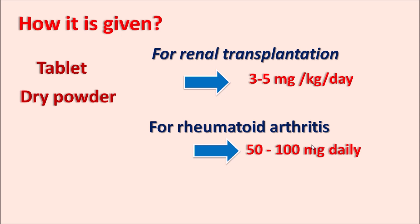Drug interactions include: allopurinol increases toxicity by inhibiting xanthine oxidase; cotrimoxazole and ACE inhibitors increase leukopenia; aminosalicylates (sulfasalazine, mesalazine, olsalazine) increase myelotoxicity by inhibiting TPMT activity. Azathioprine is available as a tablet and dry powder for IV solution. The dose for renal transplantation is 3 to 5 mg/kg/day, and for rheumatoid arthritis and other inflammatory disorders it is 50 to 100 mg/day.